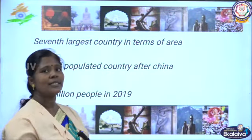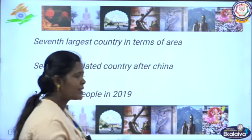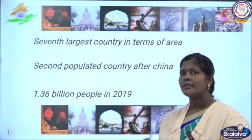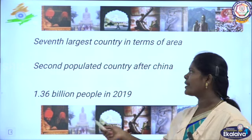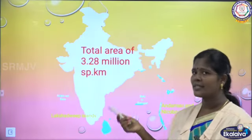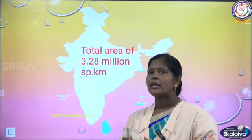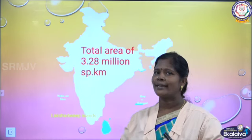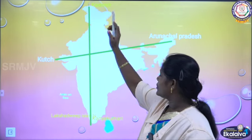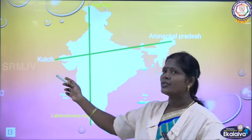India is the 7th largest country in the world in terms of area, and the 2nd most populated country after China. In 2019, the estimated population of India was approximately 1.36 billion people. India covers an area of about 3.28 million square kilometers, which is 2.4% of the earth's total land area. India stretches from Kashmir in the north to Kanyakumari in the south, and from Arunachal Pradesh in the east to the deserts of Kutch in the west.